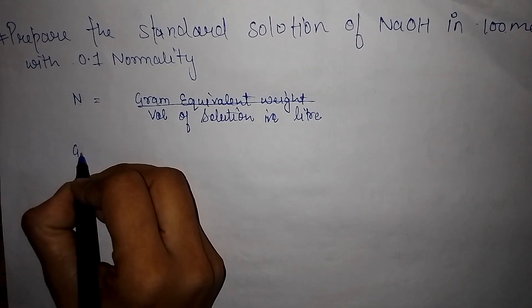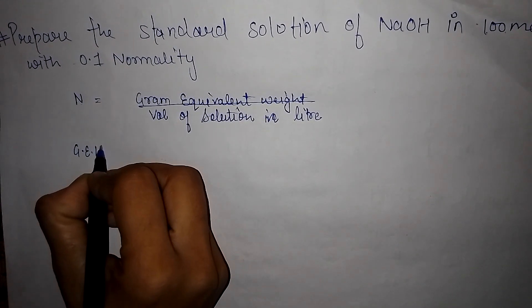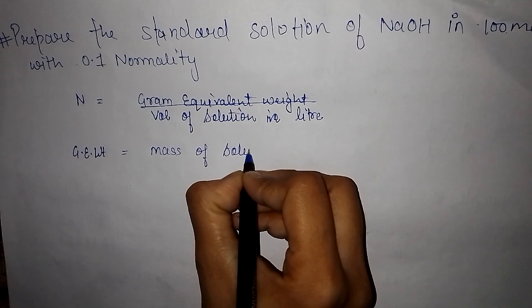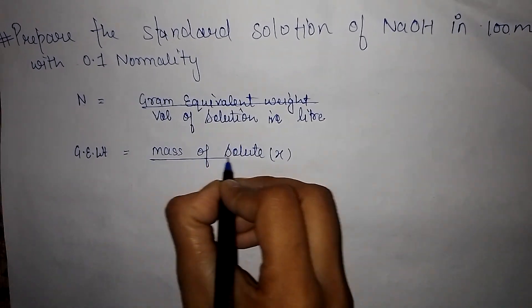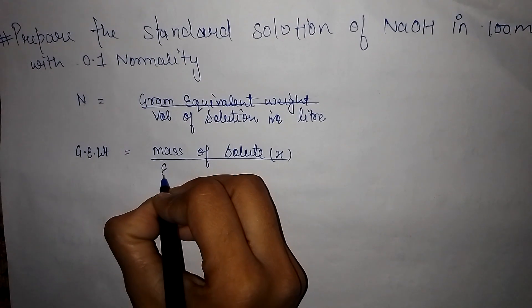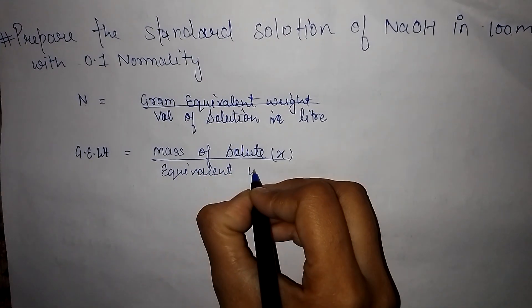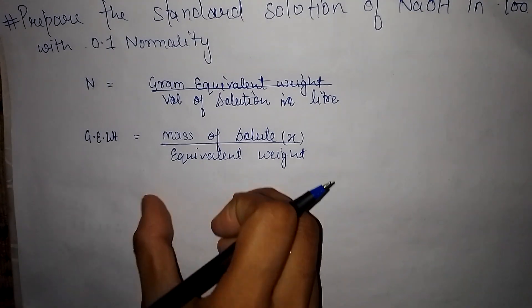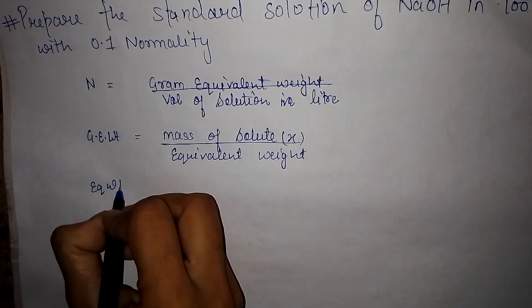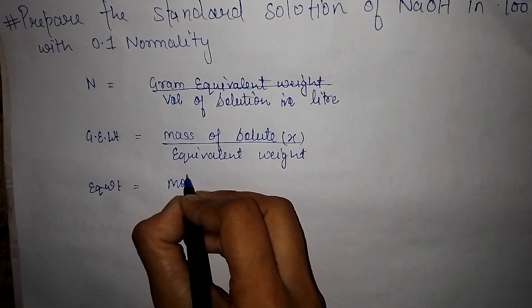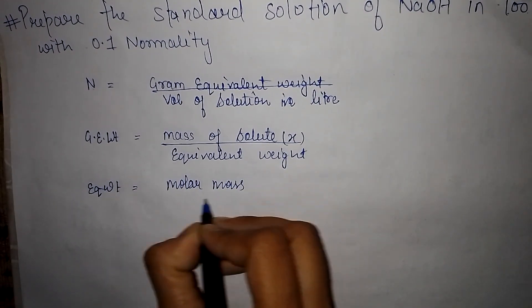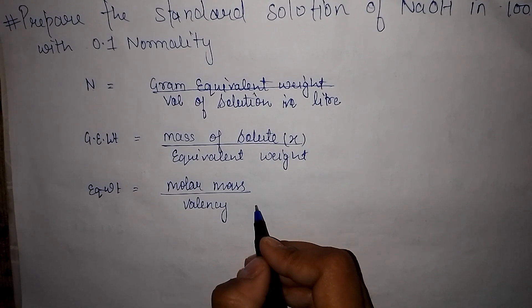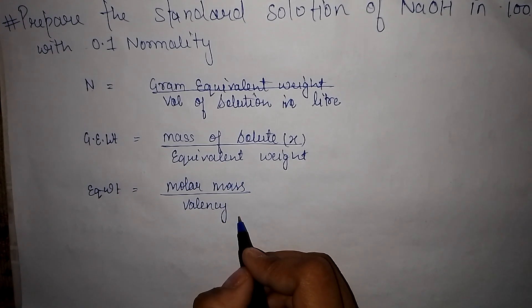Now we have to calculate gram equivalent weight. Gram equivalent weight equals mass of solute — which we denote by x — divided by equivalent weight. What is equivalent weight? Equivalent weight is molar mass divided by valency.